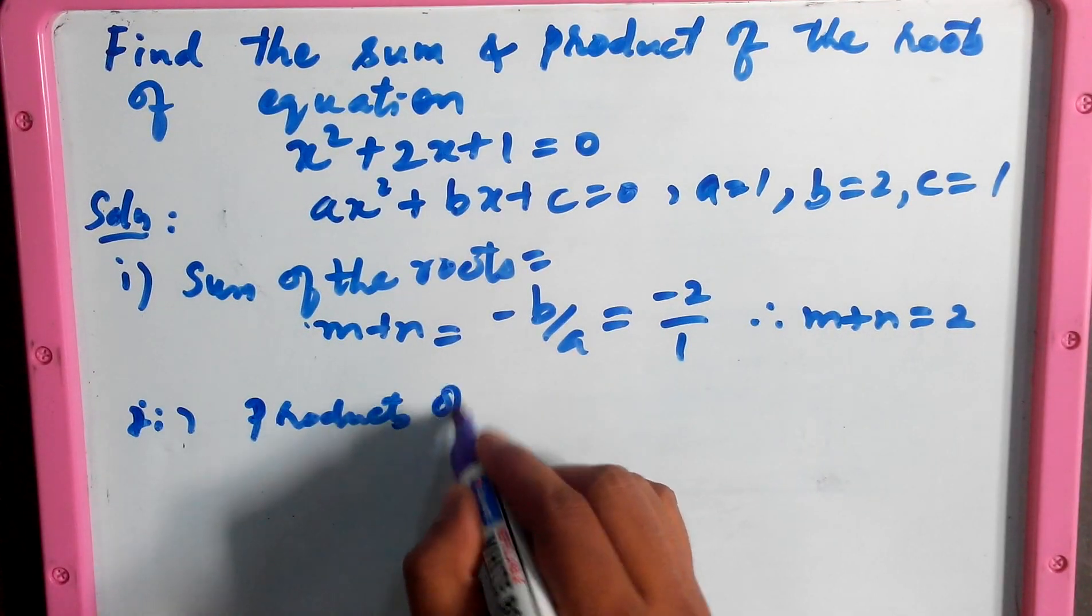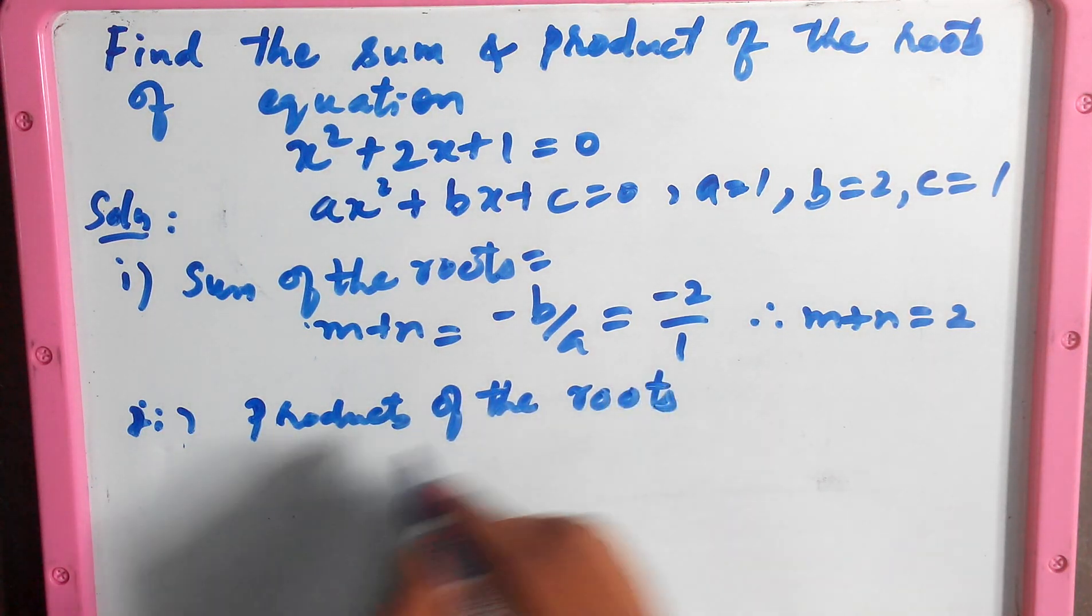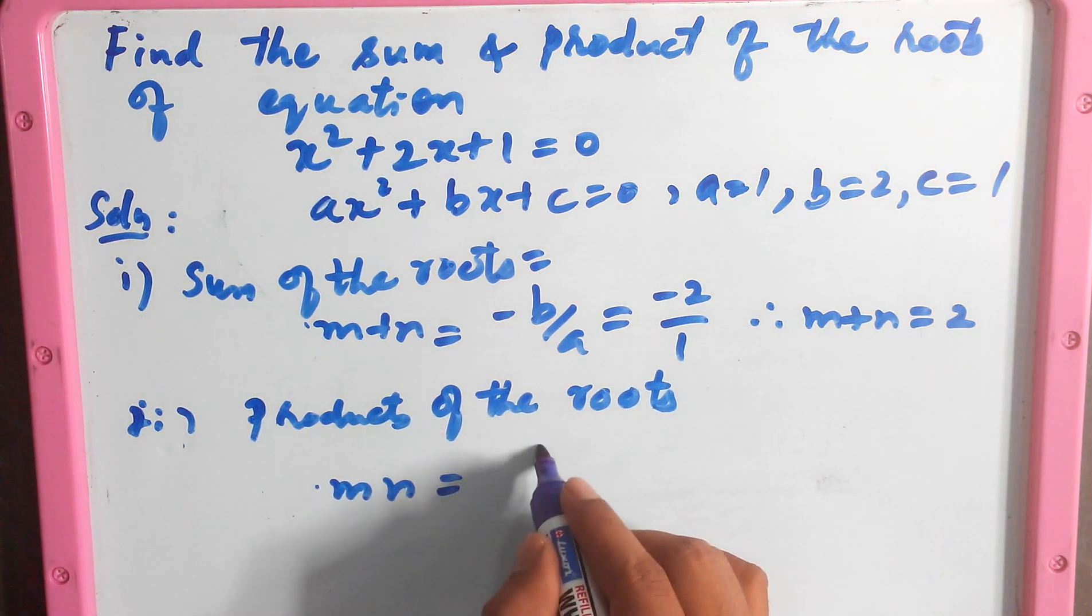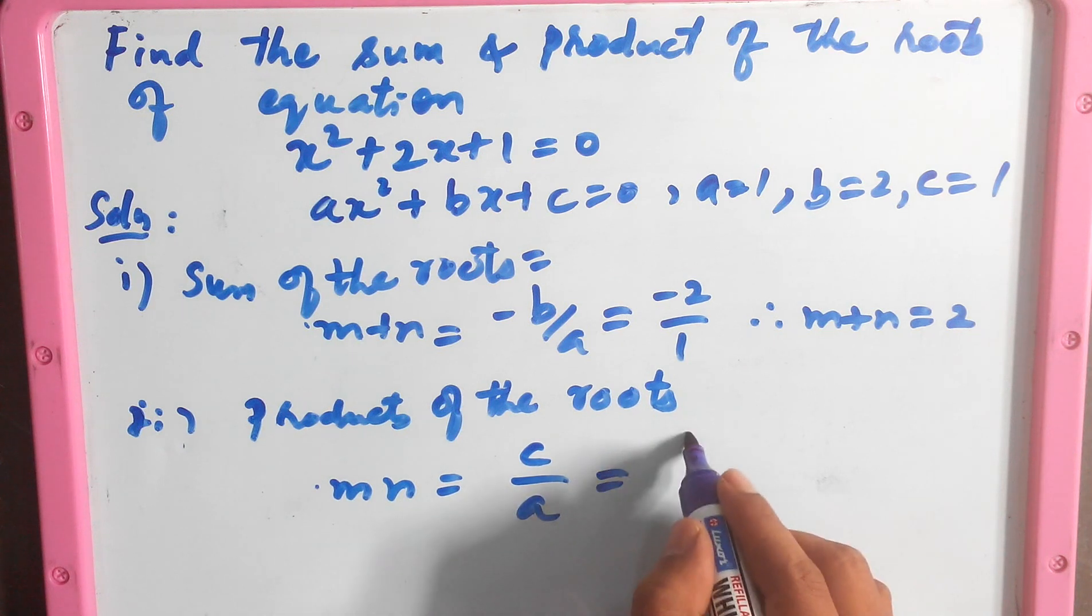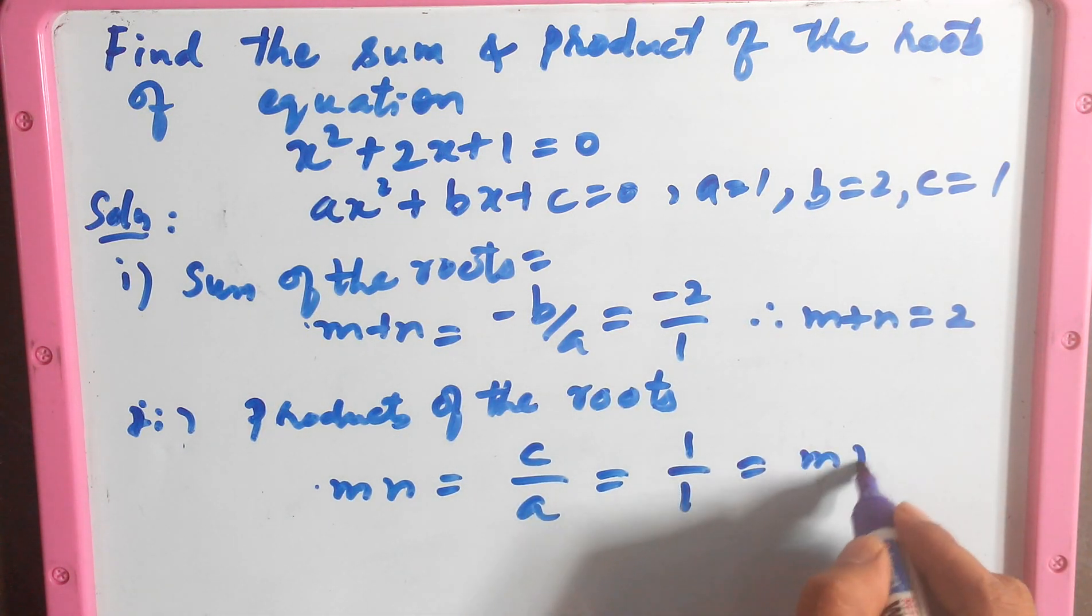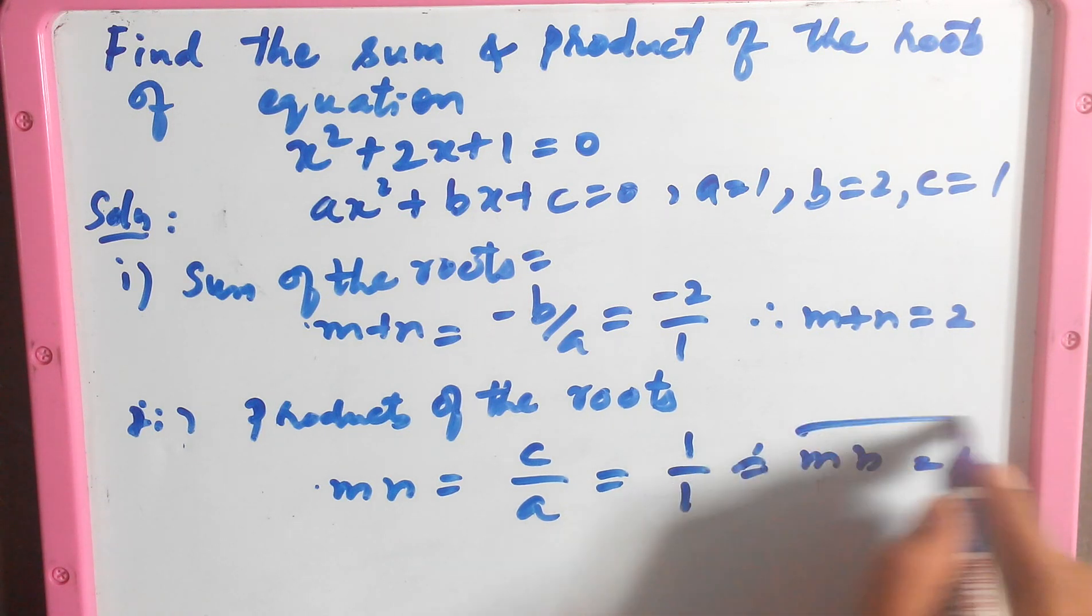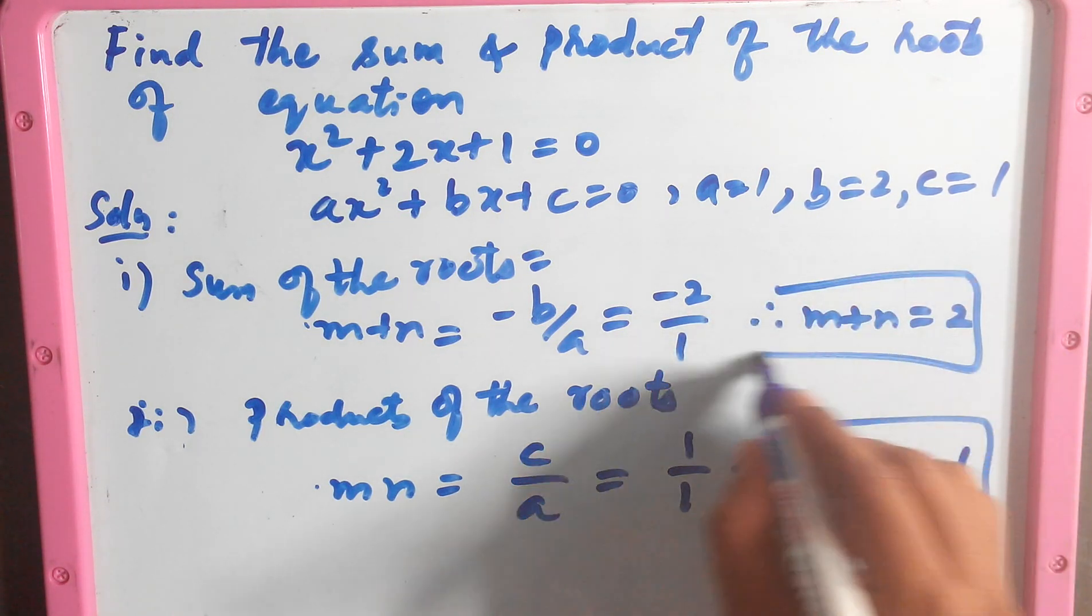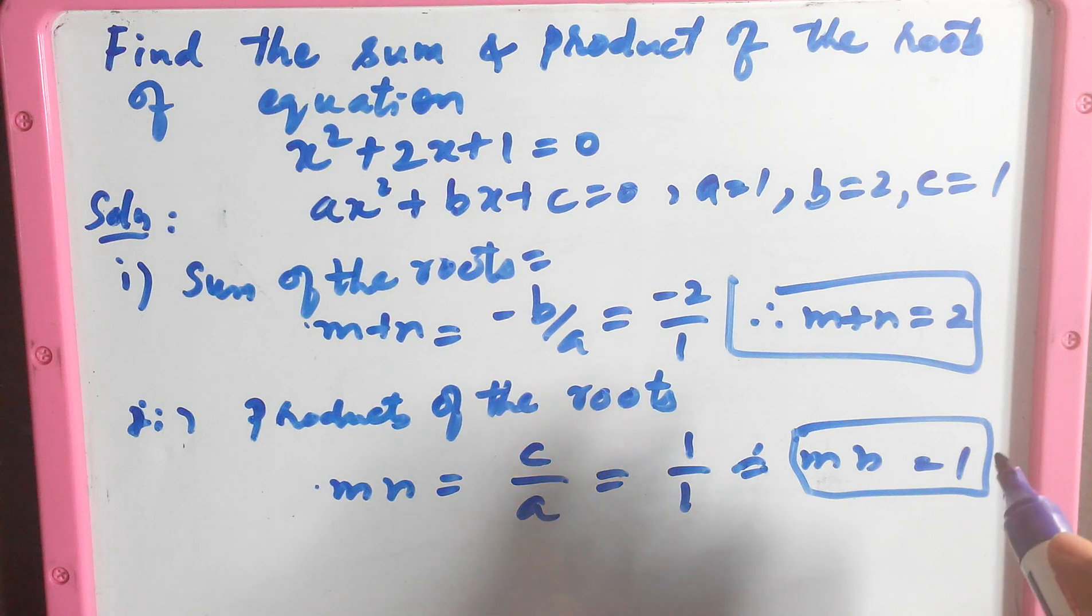the product of the roots formula is mn = c/a, which is 1/1, so mn = 1. Therefore, the sum of the roots is -2 and the product of the roots is 1.